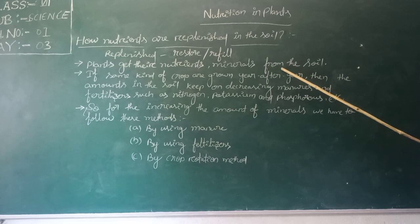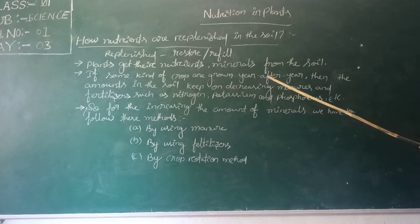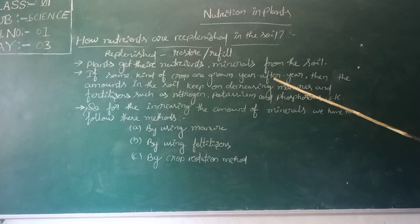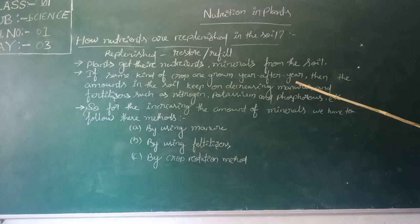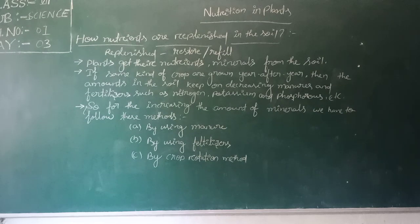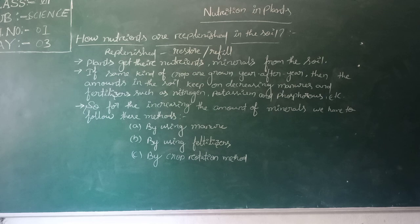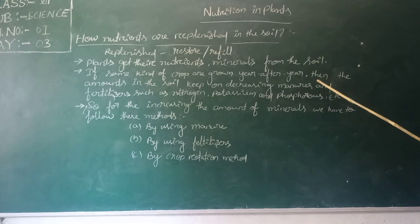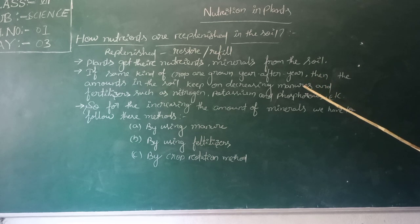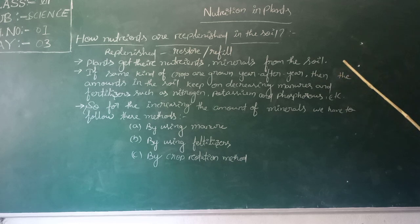Suppose in this world the same type of crop — say peas — is grown every year. Peas require nitrogen. So if we produce peas every year in the same field, the amount of nitrogen in that field will keep decreasing.